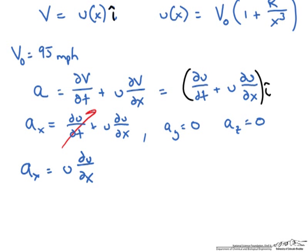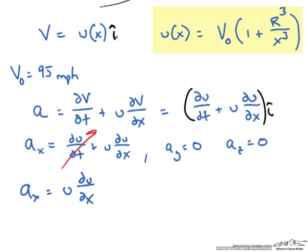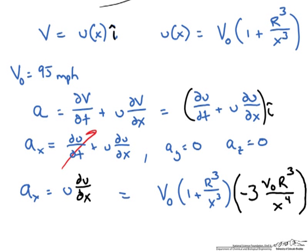And given that we have a velocity profile up top, we can calculate what a of x looks like. So we have taken the velocity, which we have represented here, and we are going to multiply it by the differential with respect to x, and I get the following. We can probably simplify this, so let me rewrite this in the following form.